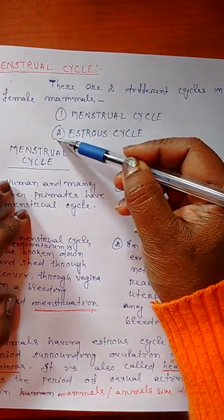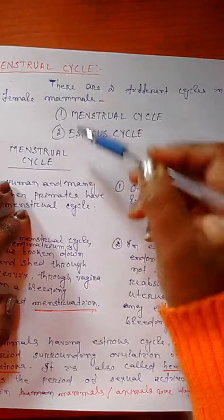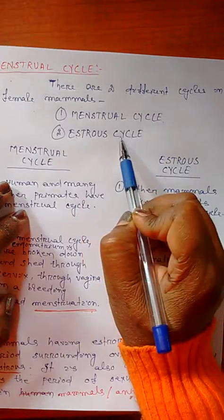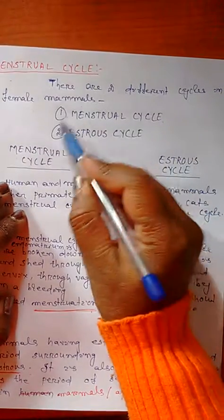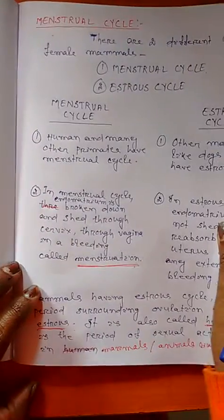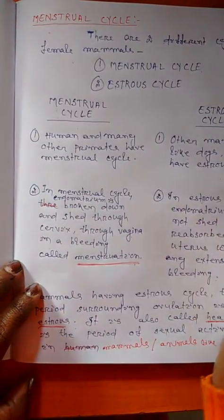So there are two types of cycles including the menstrual cycle. One is the menstrual cycle as I told, and the other is the estrous cycle. I am going to show you the major differences between the menstrual cycle and estrous cycle in animals.